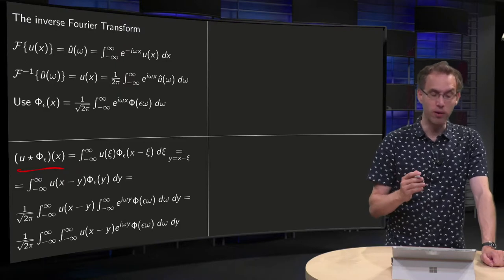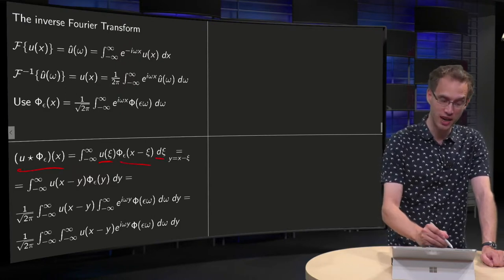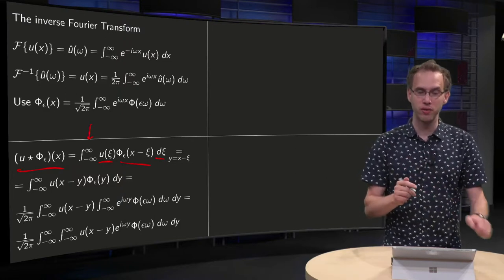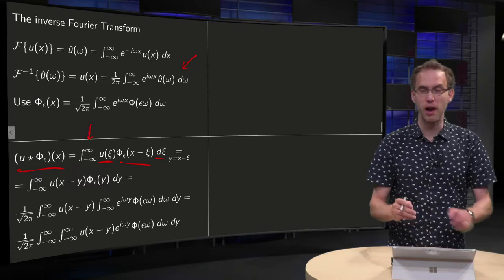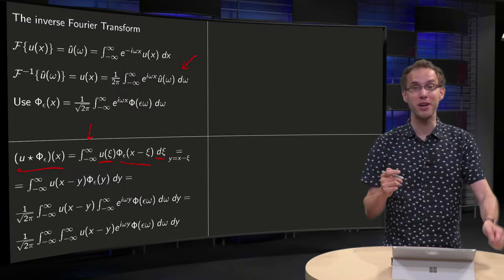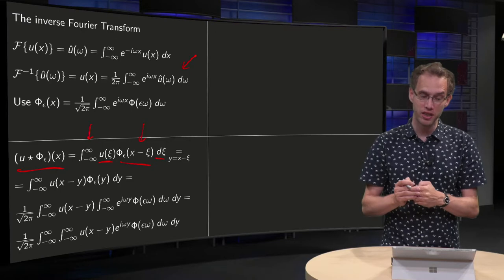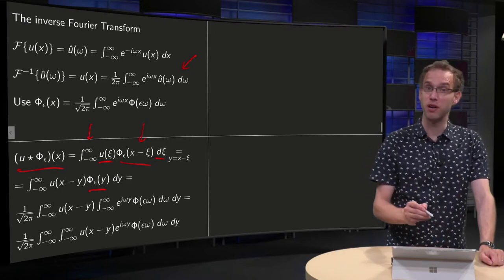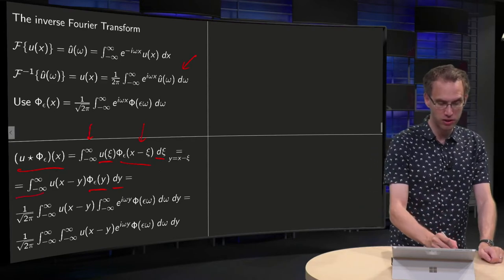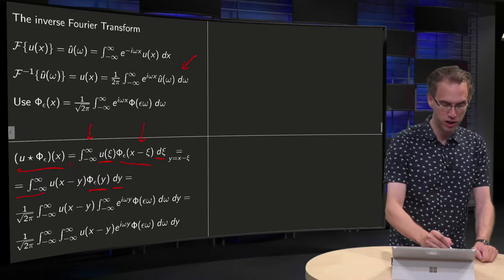The convolution is: the integral from minus infinity to infinity of u(ξ) · φ_ε(x − ξ) dξ — that is the definition of the convolution. Now we rewrite this toward the Fourier inversion formula. First step: set y = x − ξ as a change of variable. In φ_ε you get φ_ε(y); dξ becomes −dy, but this minus sign is cancelled by inverting the integration order. And u(ξ) becomes u(x − y).